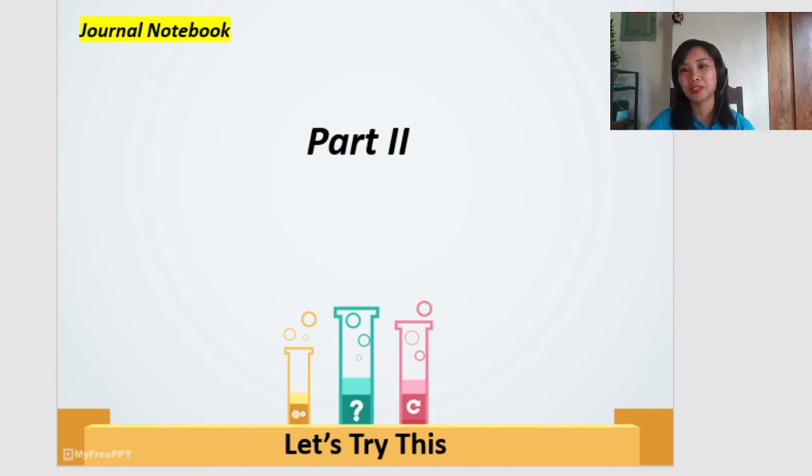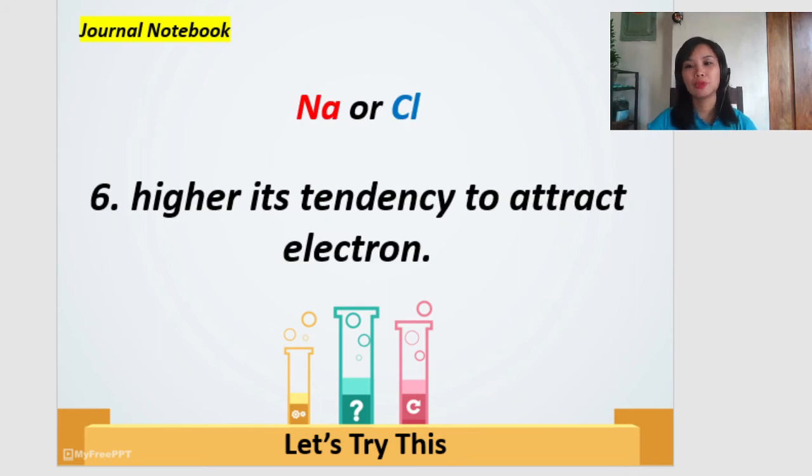How about in part two? I want you to exercise, for you to exercise, it is important to use it in chemical bonding. Okay? For part two, we are going to use now chemical elements. Okay? Sodium or chlorine. Choose only one. Now, to make you familiar, use your periodic table. Which of them has the higher or higher its tendency to attract electrons? Ready? Go.